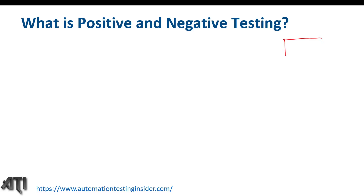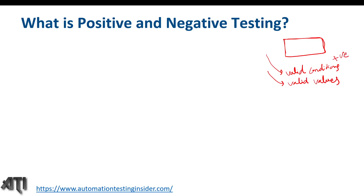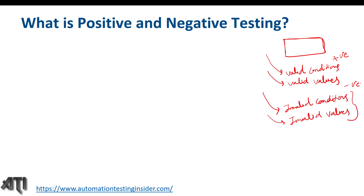Let me explain with an example so you can understand better. When we test an application with valid conditions and valid values, this is positive testing. When we perform with invalid conditions and invalid values, this is negative testing. I'll talk more about valid conditions, valid values, invalid conditions, and invalid values when I provide the examples.